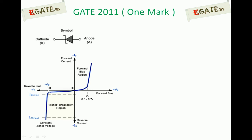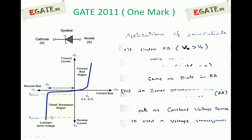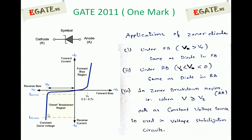The diode acts in reverse bias until the reverse voltage reaches the Zener breakdown voltage Vz. At that point, current increases but the voltage across the diode remains constant. This constant voltage is maintained between IZ minimum and IZ maximum — this region is the breakdown region. If the reverse voltage exceeds Vz, the diode enters the Zener breakdown region.